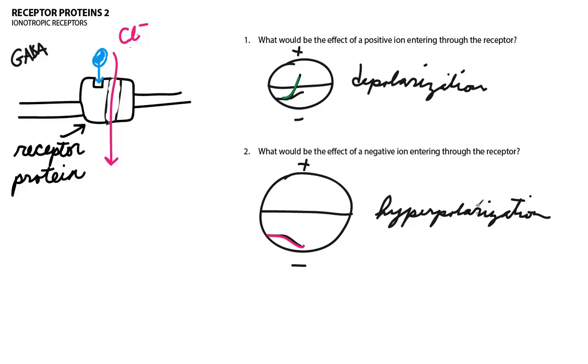So, those are two examples of actual neurotransmitter systems working on ionotropic receptors and producing either depolarization, if it's glutamate, or hyperpolarization, if it's GABA. And they're good examples of how these systems work. In the next video, we're going to take a look at how the second type of receptor protein functions, the metabotropic receptor proteins.